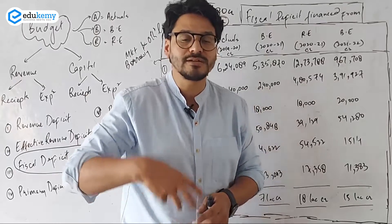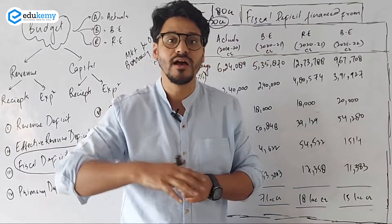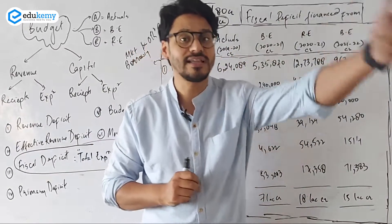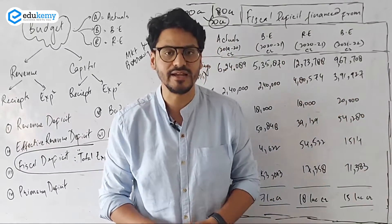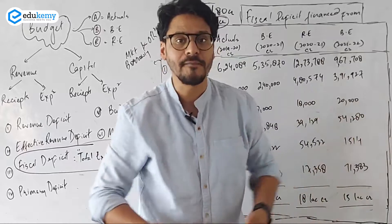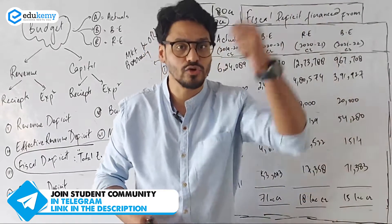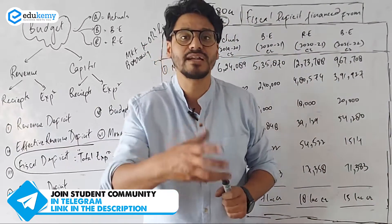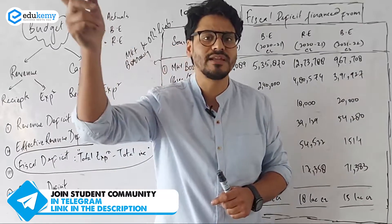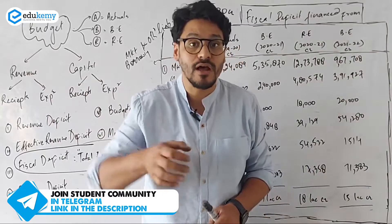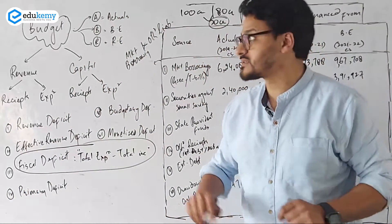Before looking at the sources, you should understand how budget data works. For example, for the year 2021, when the budget came in 2021 it was for the following year. For the coming year, you have to give a budget estimate — an estimate of how much money you will be taking from the market. That is the budget estimate. Then how much was actually taken is found in the revised estimate, which comes after six months. And then when the full year ends, we get the actual data — how much money was actually borrowed from the market.